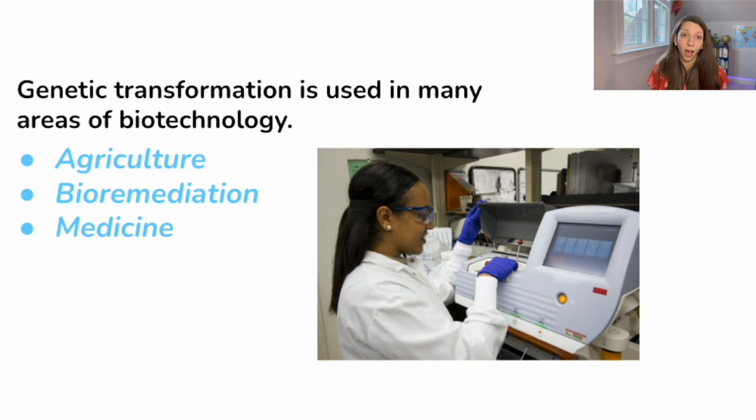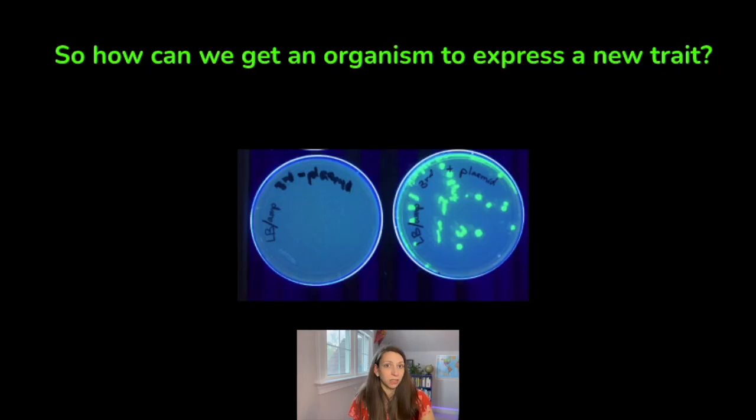We use genetic engineering in a lot of fields, including agriculture, for example, inserting genes for pest resistance or fungal resistance into certain plants. In bioremediation, where we've genetically engineered bacteria to uptake oil at oil spills, or even in gene therapy in medicine. We've even used bacteria to produce insulin for humans before. So how do we get an organism like bacteria to actually express a new trait that wasn't in its DNA before? Here we're looking at a sample of DNA that's been added to bacteria to make it glow green.